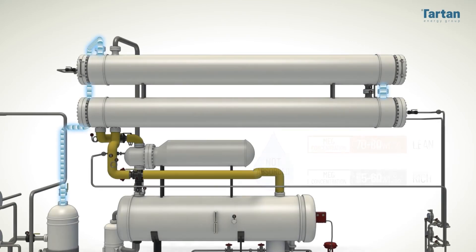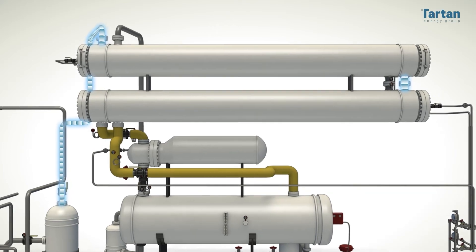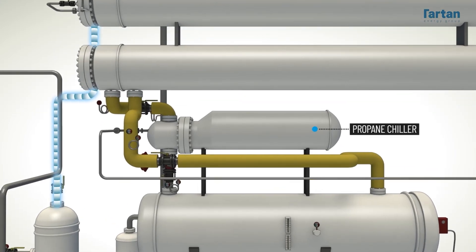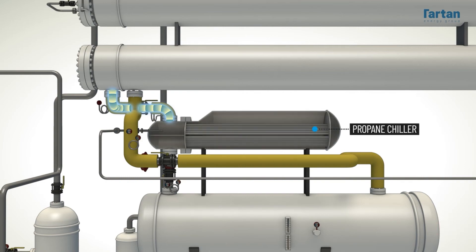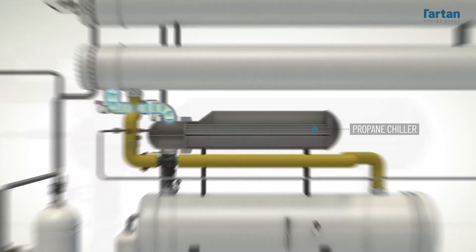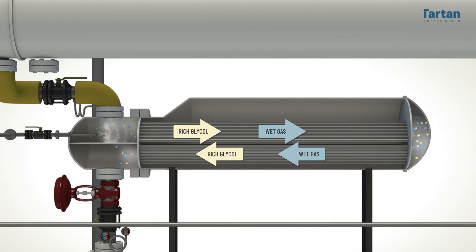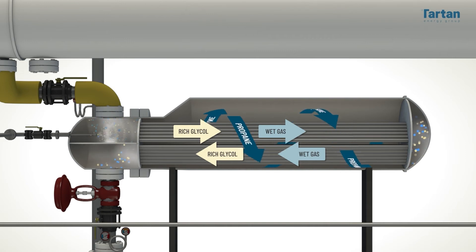After passing through the exchangers, the gas is further cooled in the chiller — an exchanger involving a propane cooling loop. The process gas enters the tube side and propane is on the shell side.